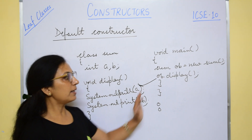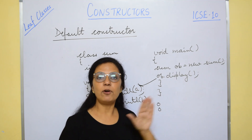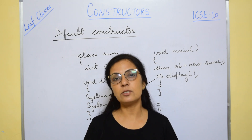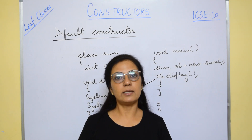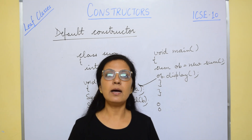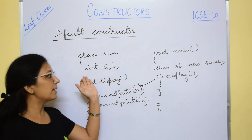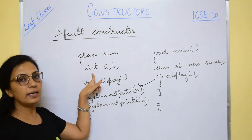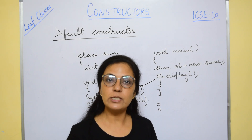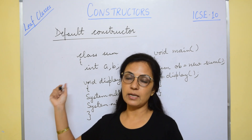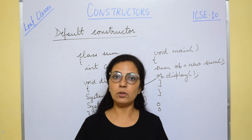Once a constructor definition is provided, the default constructor no longer works — the default constructor works only in the absence of a constructor definition. The default constructor is non-parameterized, inbuilt, and predefined. It initializes data members as per their data type: if it is int, the default value of int is used; if it is float, then according to float. Whatever data type you write for the data members, it will be initialized accordingly.